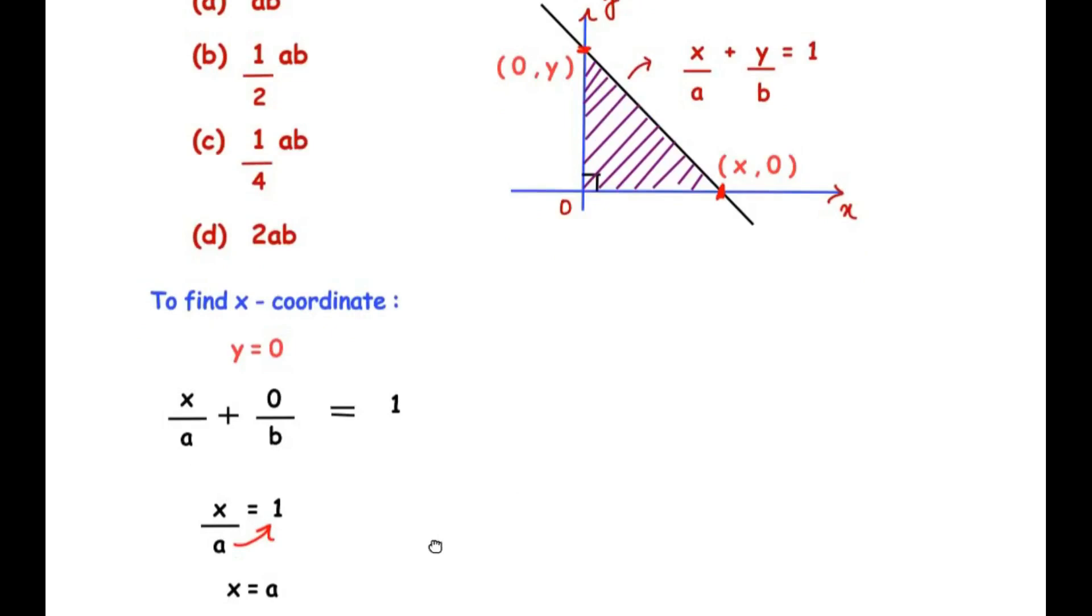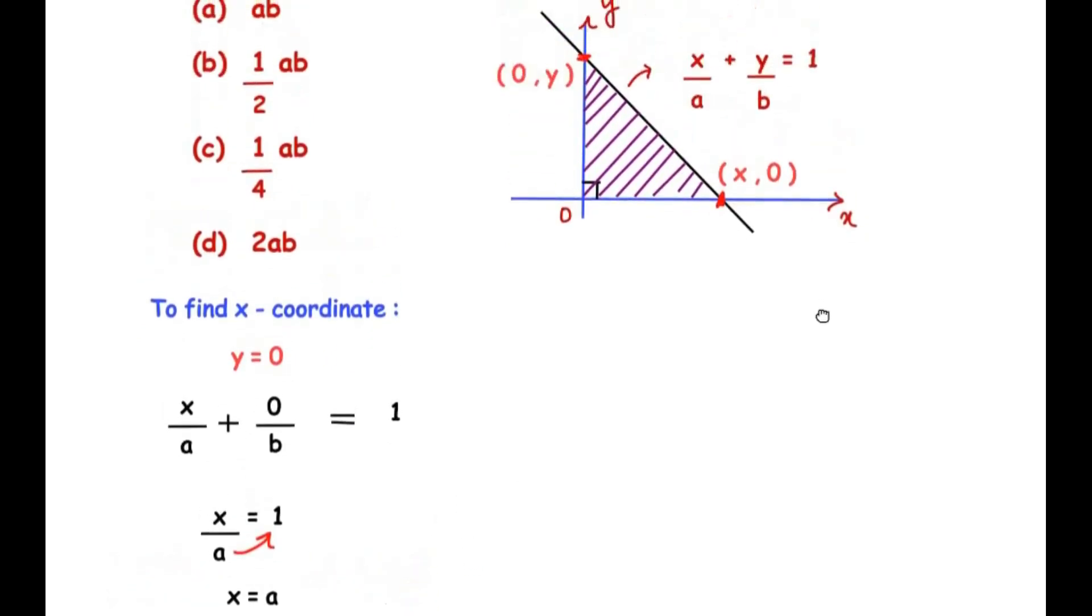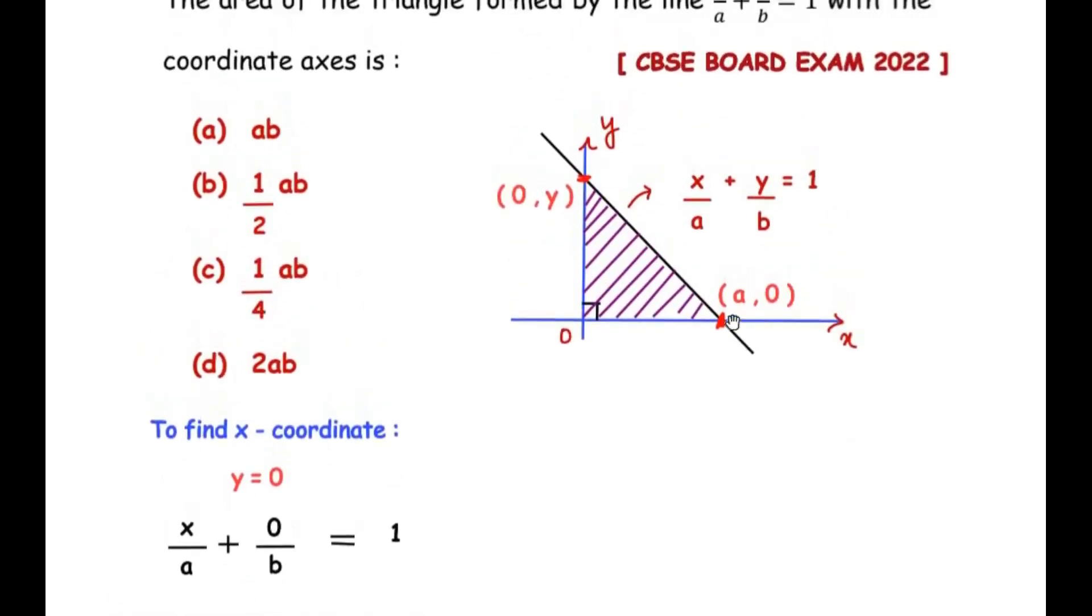So here, the x-coordinate is going to be (a, 0). So let us make the changes over here. So here we have written the x-coordinate as (a, 0).